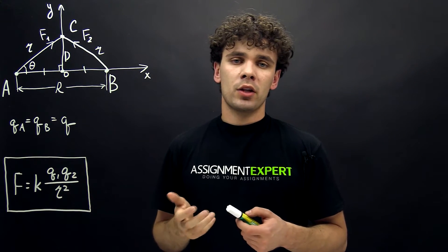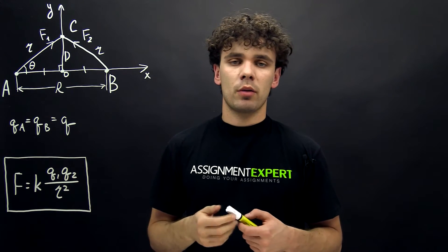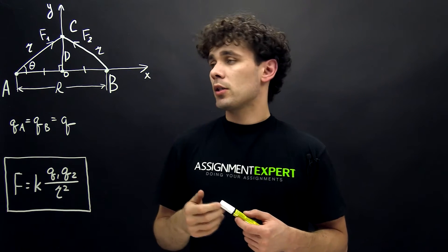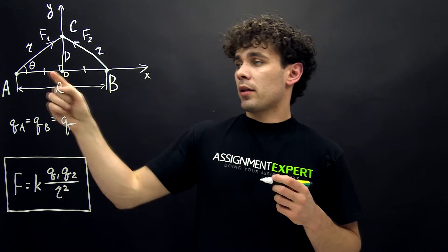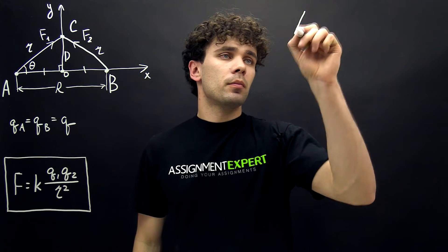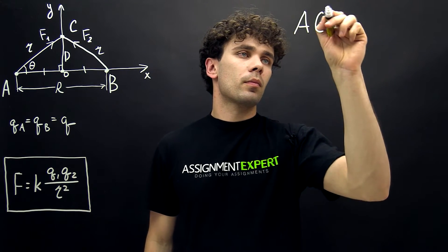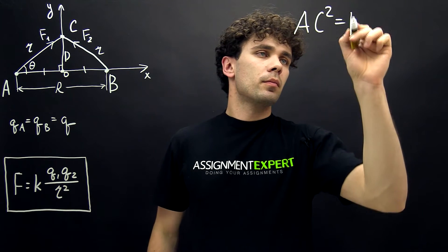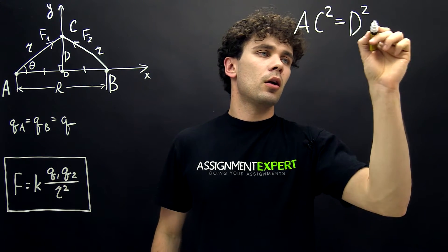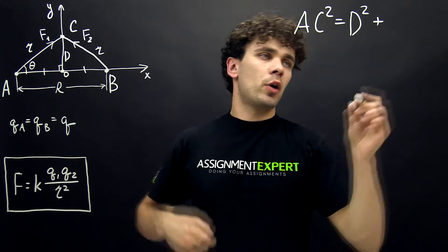We can find it from either of the triangles using Pythagorean theorem. Let's apply it to triangle AOC. And it goes like this: AC squared equals D squared plus (R over 2) squared.